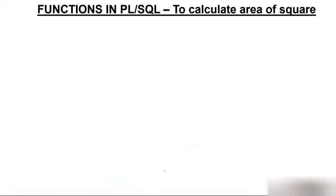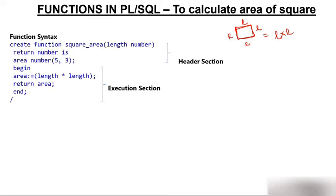Now let's look at an example: a PL/SQL function to calculate the area of a square. A square is a figure whose length and breadth are equal — all four sides are equal. The area of a square is length multiplied by length. So we need to create a function for calculating the area of a square.